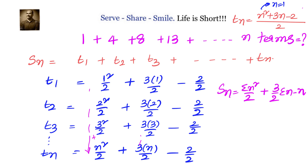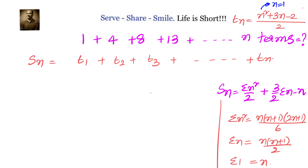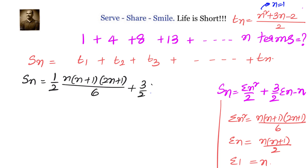We need the formulas: σn² equals n(n+1)(2n+1) over 6, and σn equals n(n+1) over 2, and σ1 equals n. Substituting into Sn: Sn equals (1 over 2) times [n(n+1)(2n+1) over 6] plus (3 over 2) times [n(n+1) over 2] minus n.